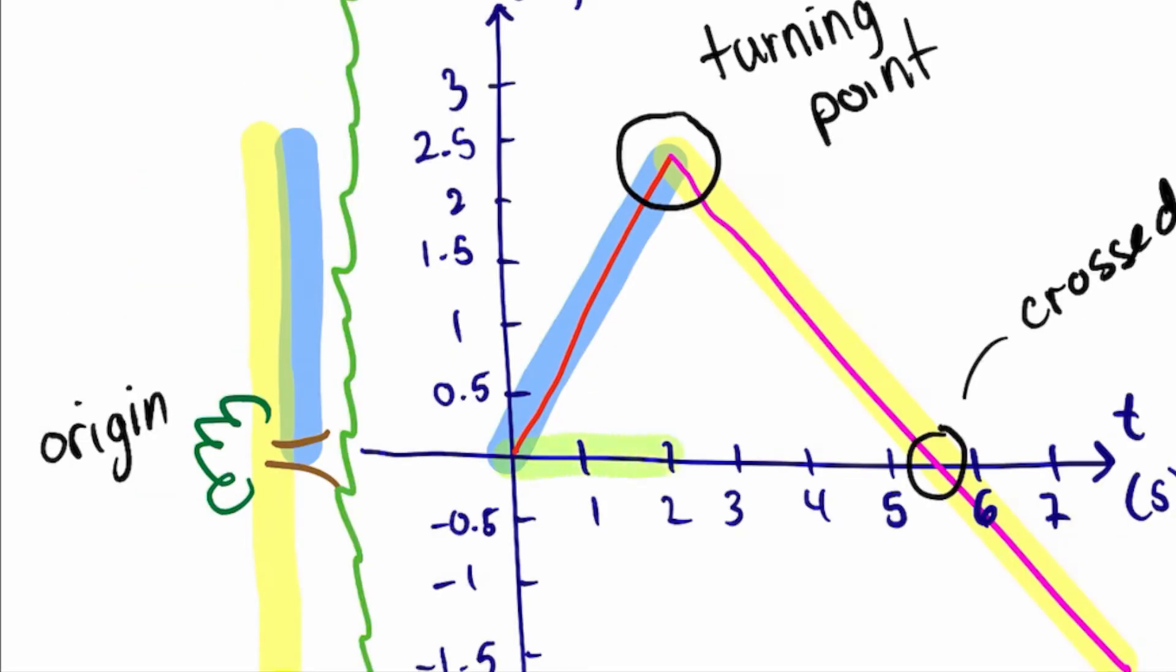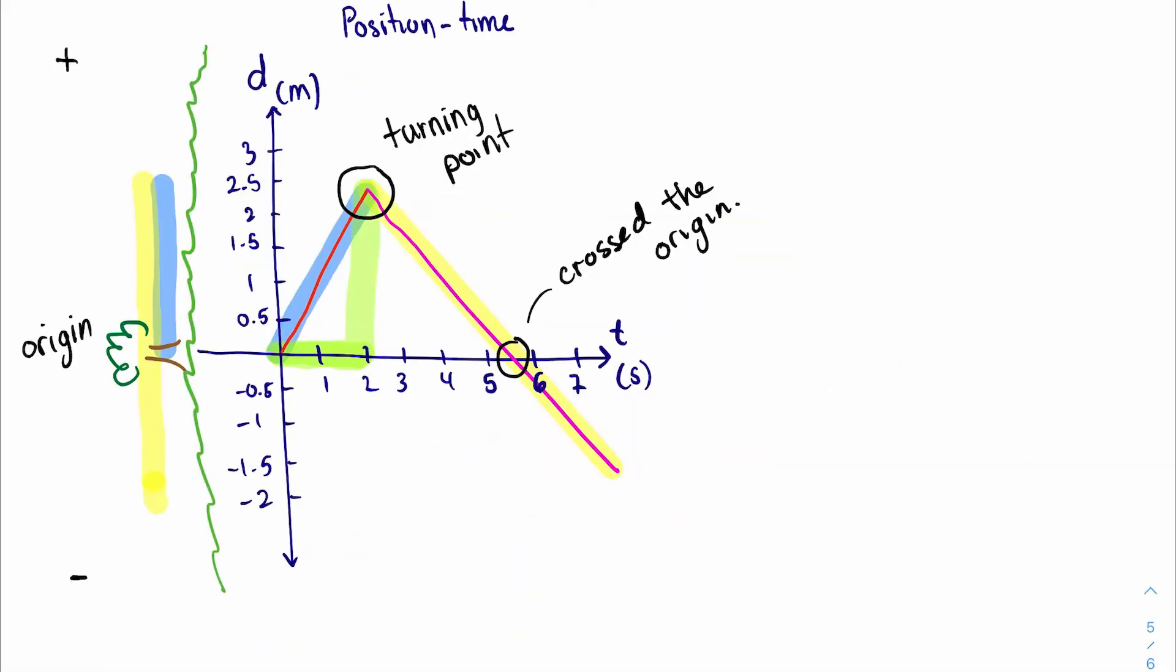But we could do better than that. We can represent which one is moving faster than the other. Notice if we're looking at the red graph, in two seconds of time the cheetah covers about 2.5 meters. So if we were to take the slope, in other words, slope of red line equals: the rise was 2.5 meters difference and the run, which was the change in time, was two seconds. So we have 2.5 over 2 meters per second.